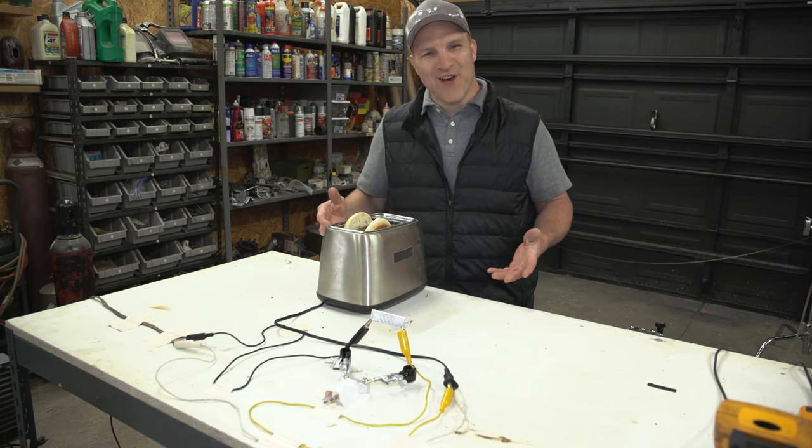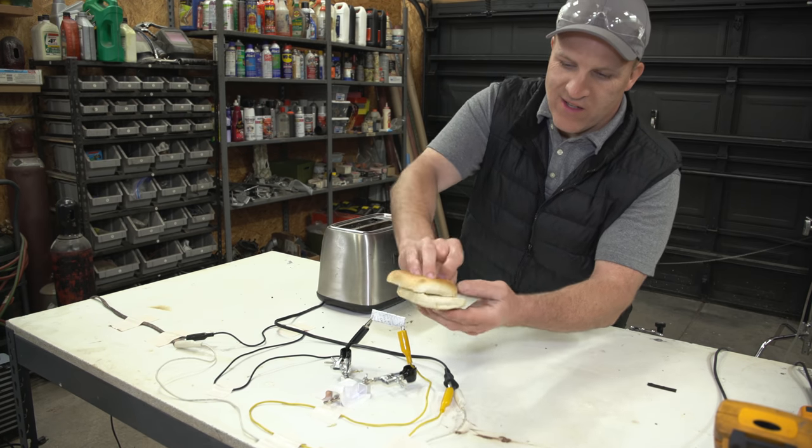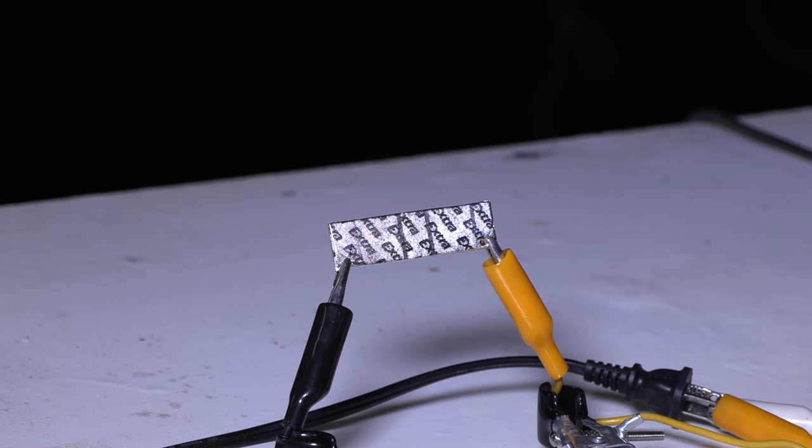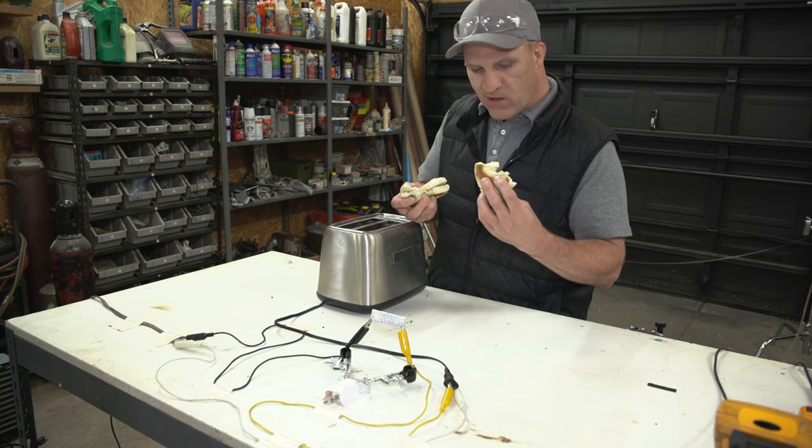Alright well that was pretty uneventful. My bagels are pretty much, I mean they're cooked, this is kind of how I like them. That was 800 watts. Nothing happened to the bubble gum wrapper at all. It handled it like a champ. So the next thing I'm going to do as soon as I finish my bagel here, one piece. I'm going to bring a heater that's about 1500 watts so it's about double the wattage of this.